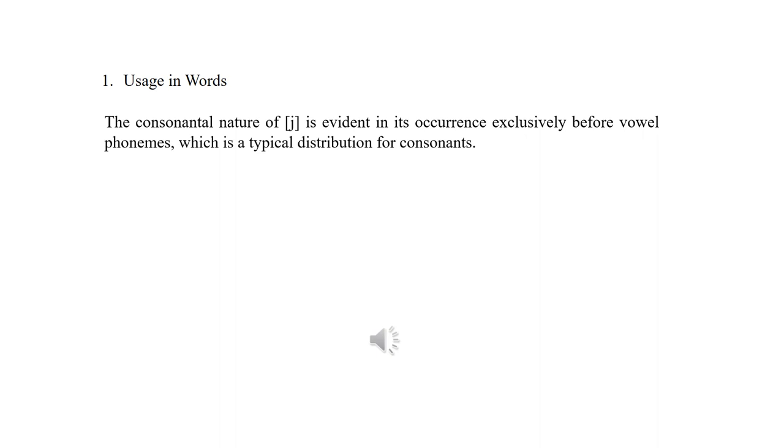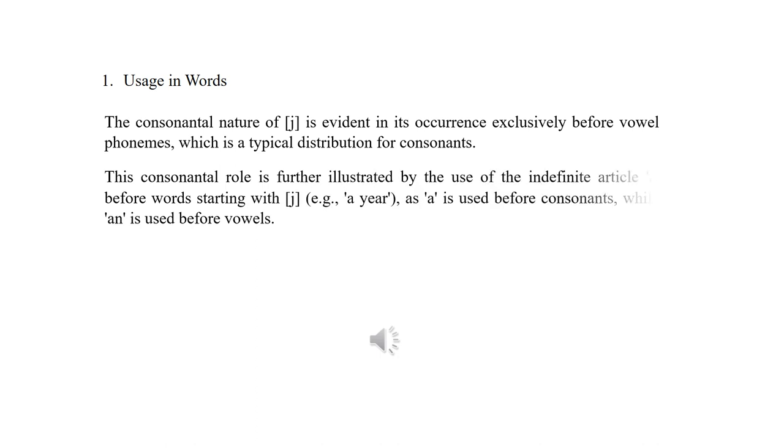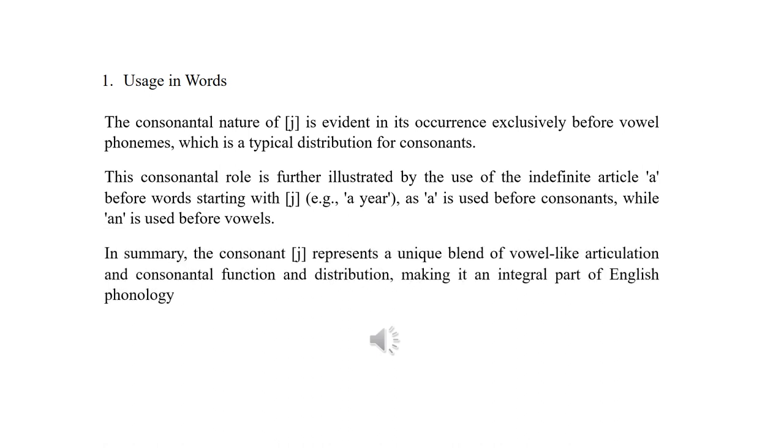The consonantal nature of y is evident in its occurrence exclusively before vowel phonemes, which is a typical distribution for consonants. This consonantal role is further illustrated by the use of the indefinite article a before words starting with y, e.g., a year, as a is used before consonants, while an is used before vowels. In summary, the consonant y represents a unique blend of vowel-like articulation and consonantal function and distribution, making it an integral part of English phonology.